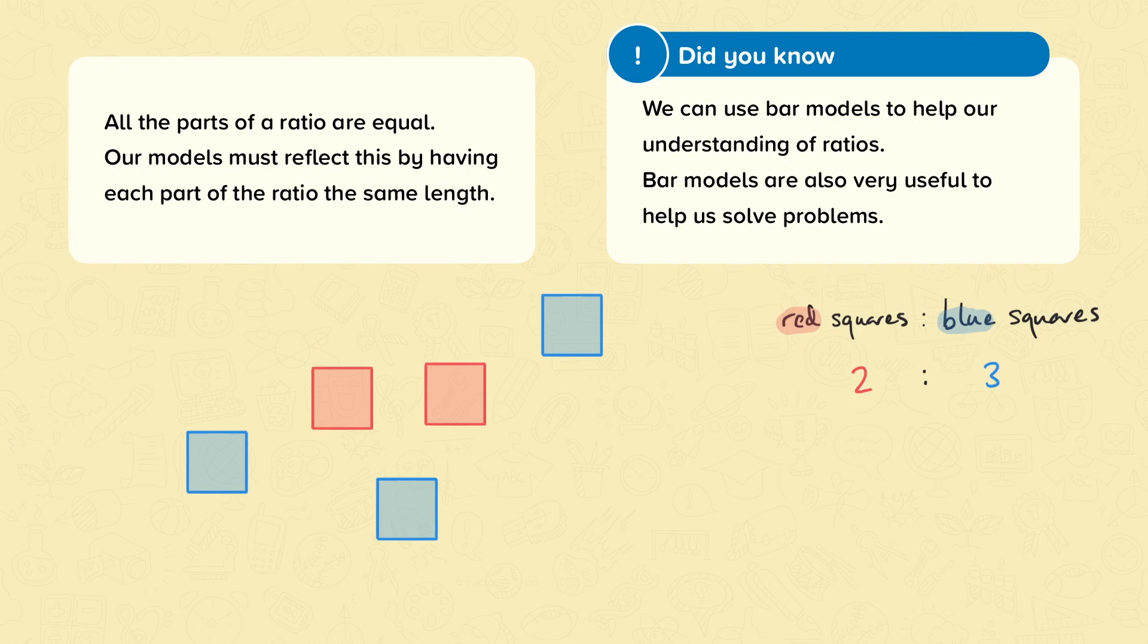Looking at the same example, the ratio of blue squares to red squares is three to two. Notice that the order of the words has made the order of the numbers change.